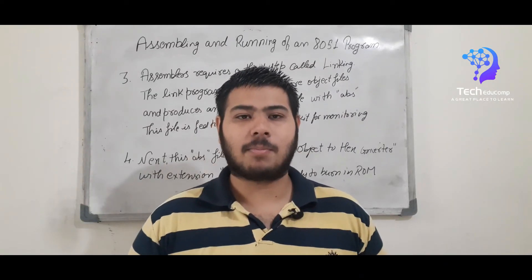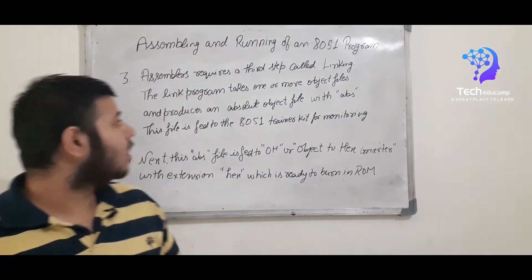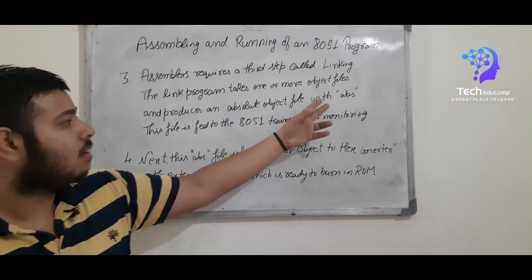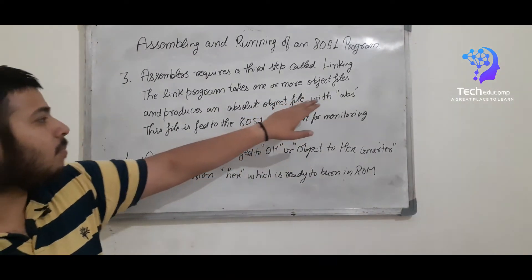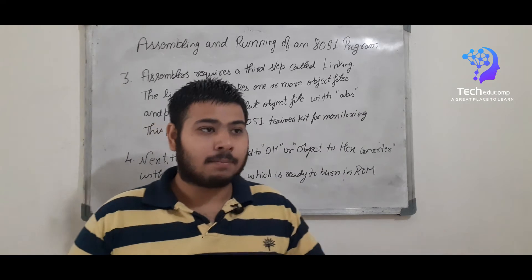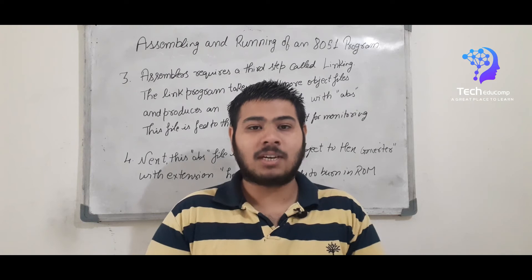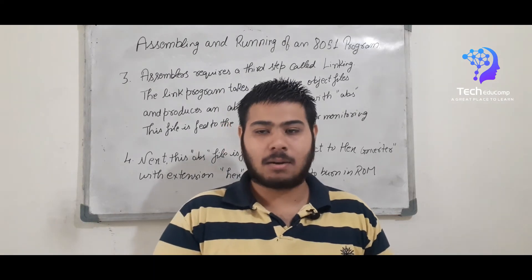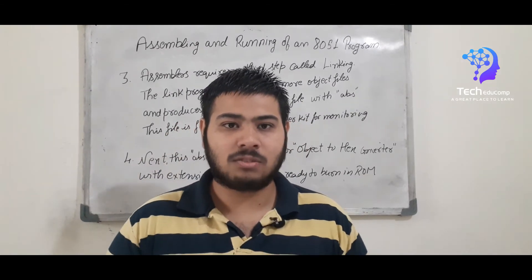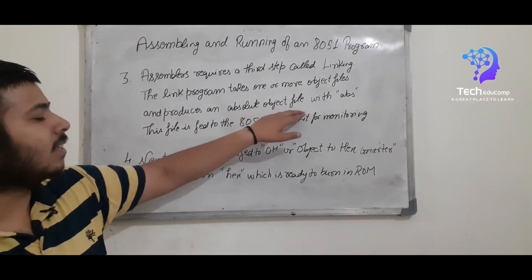Moving on to step number three. The assembler requires a third step called linking. What does linking do? It takes one or more object files and produces an absolute object file with an .ABS extension. This absolute object file is fed to an 8051 emulator kit for monitoring the output. As you may have seen in your college laboratory, there is a kit with a microcontroller, some LCDs, some LEDs, and a keypad from which we can write code and get a desired output.